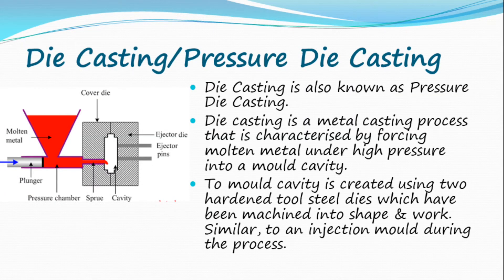Die casting, also known as pressure die casting, is a metal casting process characterized by forcing molten metal under high pressure into a mold cavity. The mold cavity is created using two hardened tool steel dies which have been machined into shape and work similar to an injection mold during the process.